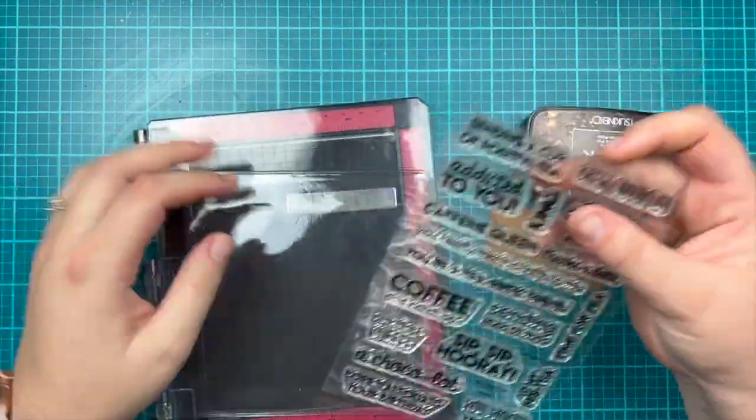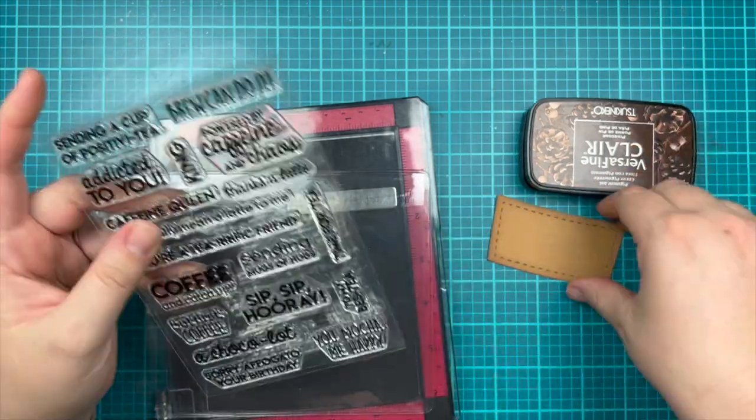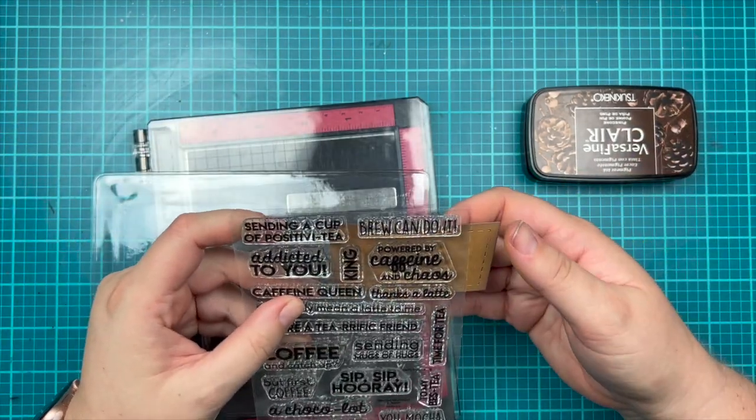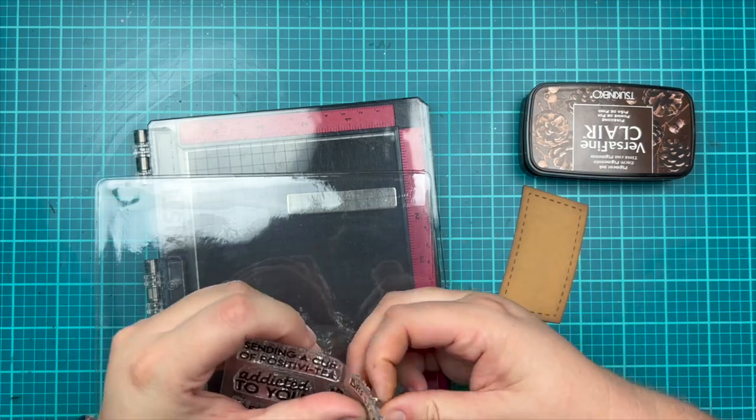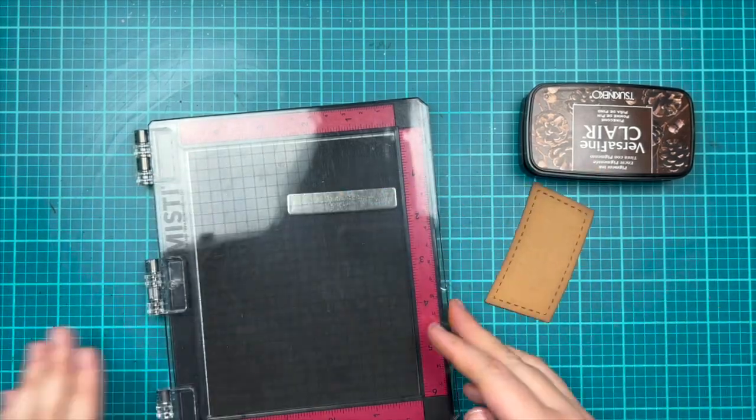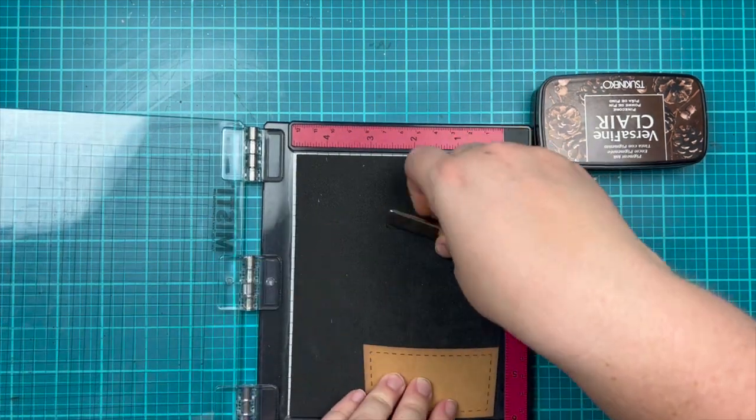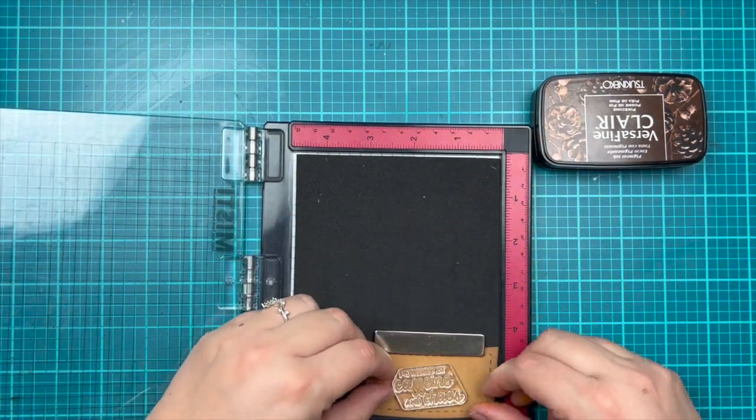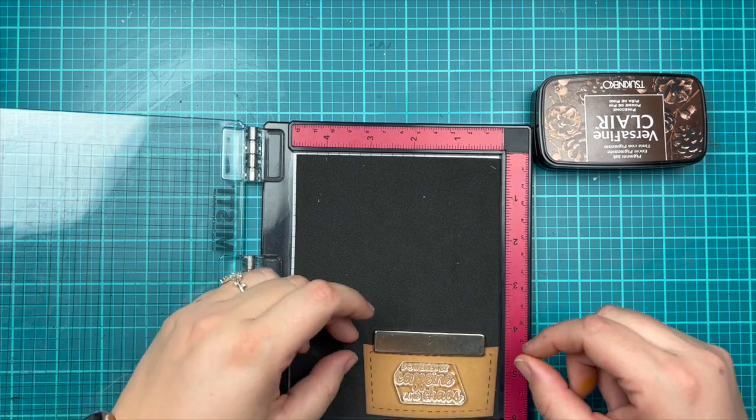Now I want to add a sentiment to my card. I'm grabbing the new stamp set called Tea Time Sentiment Stamps and I decided to go with Powered by Caffeine and Chaos. I thought that would be really cute for this coffee cup with shaker element inside. I grabbed my MISTI and I'm using VersaFine Clair in Pinecone, which is a brown ink, to stamp my sentiment.